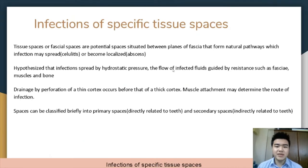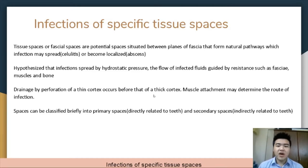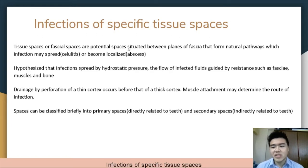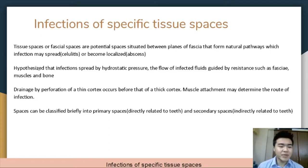My name is Lim Yen Sing, and I will be talking about infections of specific tissue spaces. Tissue spaces or facial spaces are potential spaces situated between planes of fascia that form natural pathways along which infection may spread, causing cellulitis, or the infection may become localized, causing abscesses. They are called potential spaces because they are not actual spaces until pus has been formed within them. These spaces are compartments that contain structures such as salivary glands, fats, or lymph nodes. It is hypothesized that infections may spread by hydrostatic pressure, with the flow of infected fluids guided by resistance such as fascia, muscles, and bones.